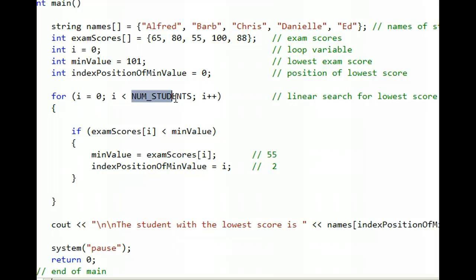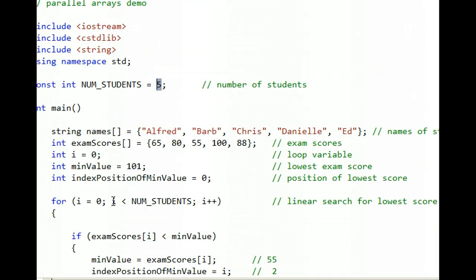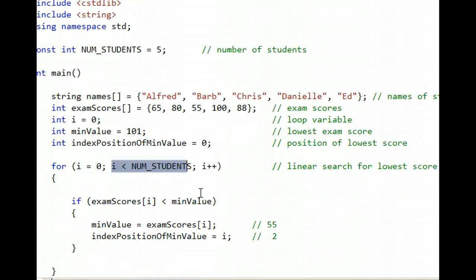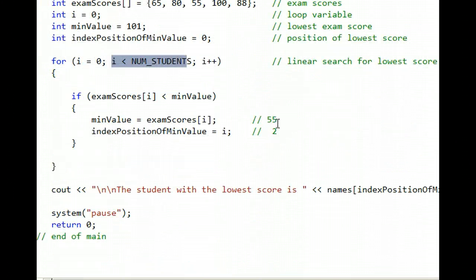Remember that NUM_STUDENTS here is a constant, and it's equal to 5. And because 5 is not less than 5, the for loop aborts. We're left with these two values stored in these two variables, minValue and indexPositionOfMinValue. The 2 is what we really want. We don't care about the 55 anymore.